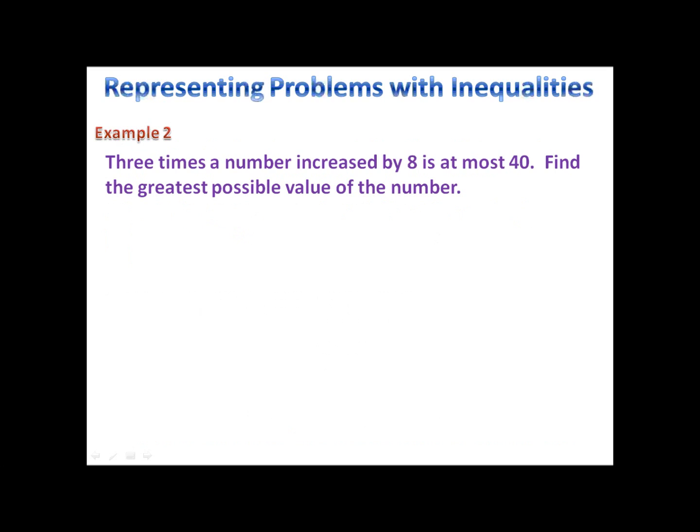In example 2, we have a number problem. We saw these earlier where we had something like 3 times the number increased by 8 is 40. Now we're just changing the is to an inequality. In this case, is at most. So 3 times the number increased by 8 is at most 40. We want the greatest possible value of the number. 3 times the number increased by 8 is 3X plus 8, is at most, less than or equal to 40. So we have 3X plus 8 less than or equal to 40. Now we can solve that inequality. We have X is less than or equal to 16.